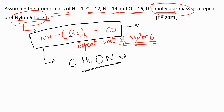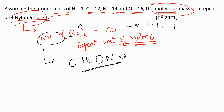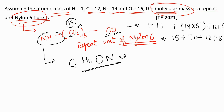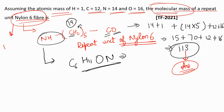Calculating the molecular mass: NH = 14 + 1 = 15; CH₂ × 5 = 14 × 5 = 70; CO = 12 + 16 = 28. Adding all: 15 + 70 + 28 = 113. So the molecular mass of the repeat unit of nylon 6 fiber is 113. That is the correct answer.